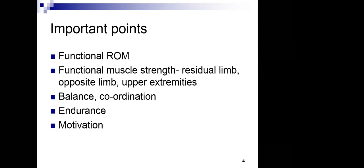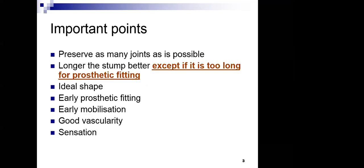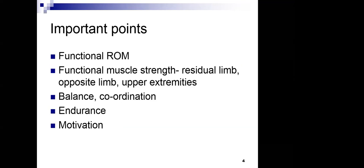Upper extremity strengthening is essentially basic crutch muscle strengthening. The opposite limb likewise must be strong enough to support ambulation — similar to any other trauma case.